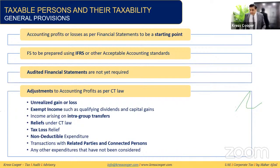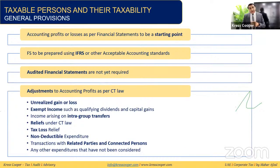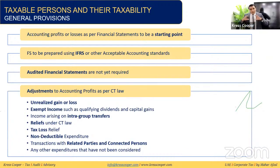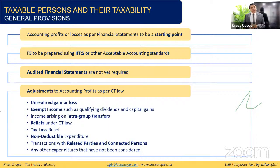To summarize what we've covered so far: we understand what resident persons, non-resident persons, out-of-scope persons, and exempt persons are. We've covered the definition of family foundations, the scope of partnerships, and the impact of corporate tax on free zones. We have assessed the scope of corporate tax — on which persons it applies and on which it does not.